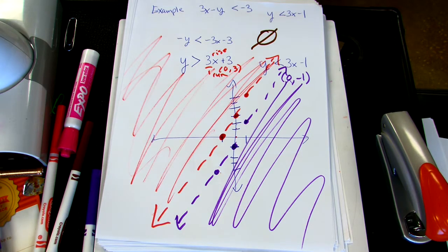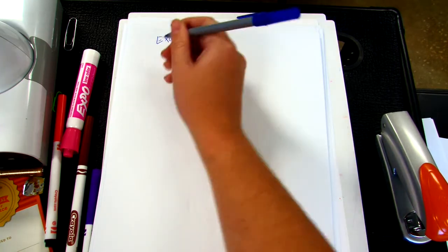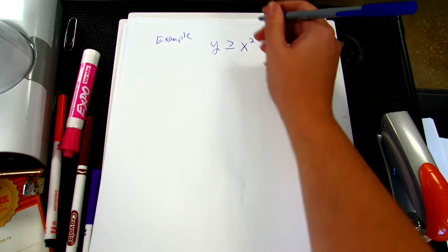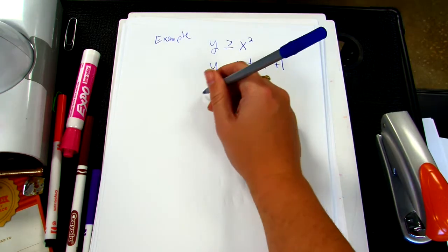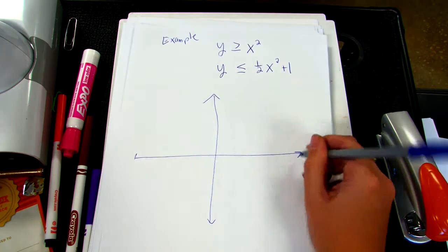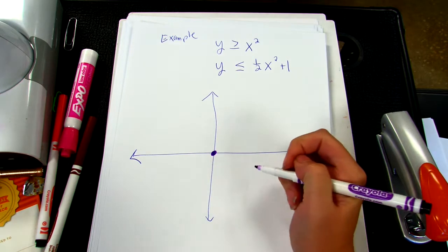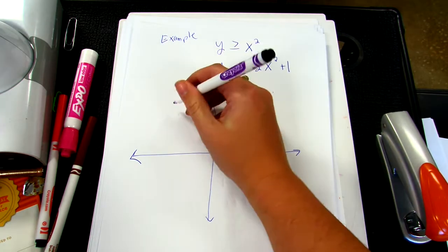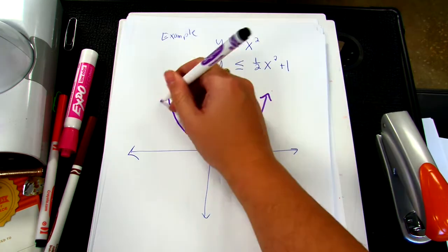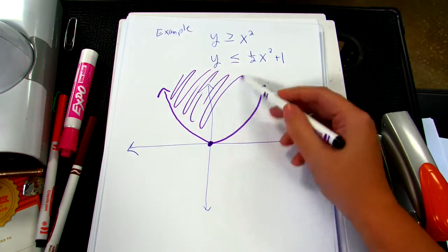Last example: y is greater than or equal to x squared, and y is less than or equal to one-half x squared plus 1. These are already both solved for y — and they're quadratic. Remember, x squared is a parabola with a vertex at the center. Since it's equal to, the line is solid. We draw a solid parabola, and since it's greater than, we shade above.